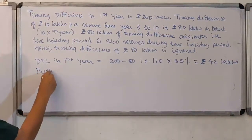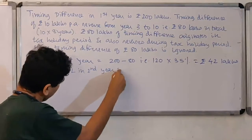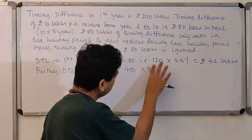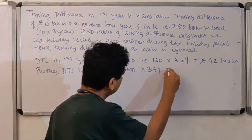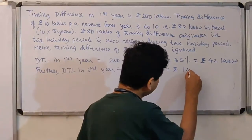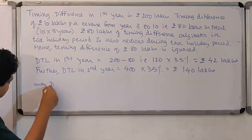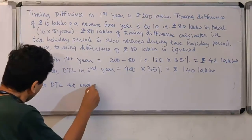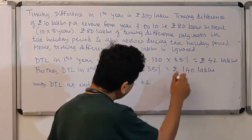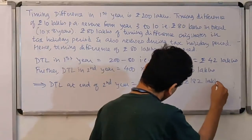For the second year: there is a further timing difference of Rs. 400 lakhs, resulting in an additional DTL of Rs. 140 lakhs. Therefore, DTL at the end of the second year equals: first year Rs. 42 lakhs plus second year Rs. 140 lakhs = Rs. 182 lakhs.